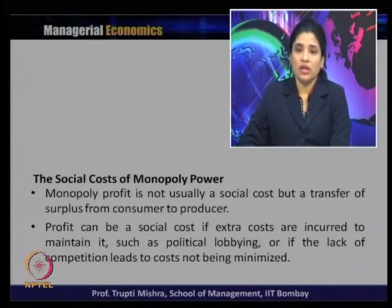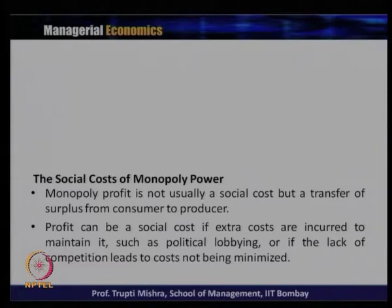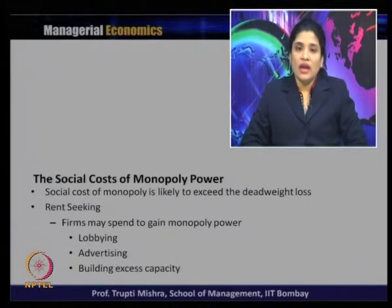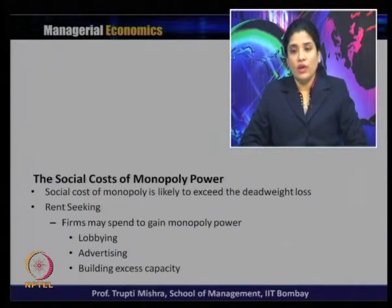Profit can be a social cost if extra costs are incurred to maintain it, such as political lobbying, or if lack of competition leads to costs not being minimized. Social cost of monopoly is always likely to exceed the deadweight loss — perhaps due to rent-seeking, because the firm may spend to gain monopoly power. A firm may spend to gain monopoly power through lobbying, advertising, and building excess capacity.